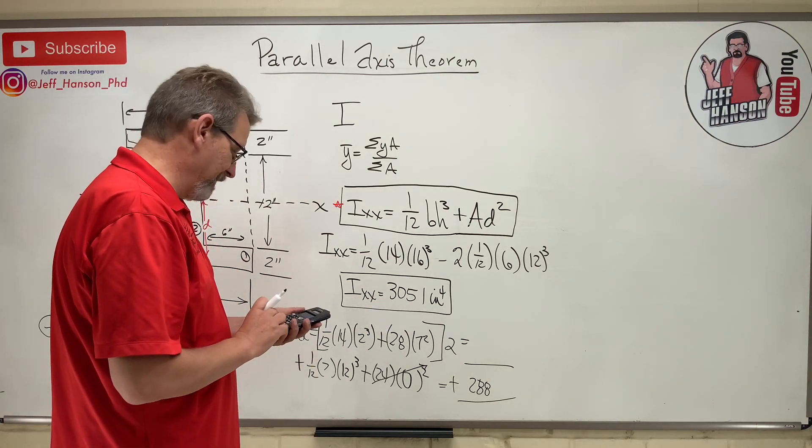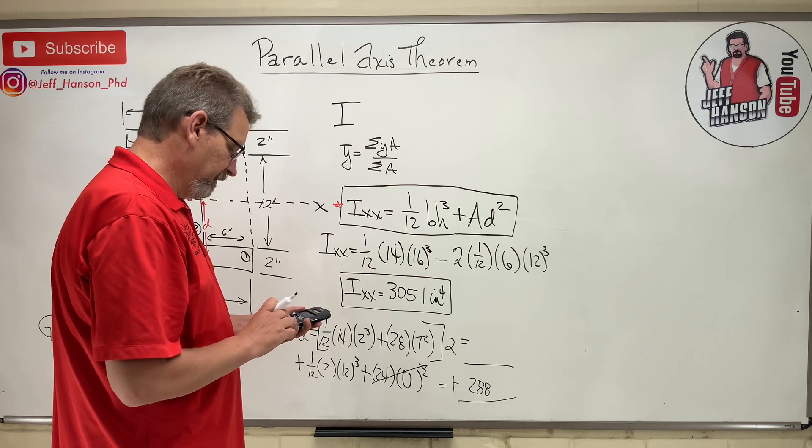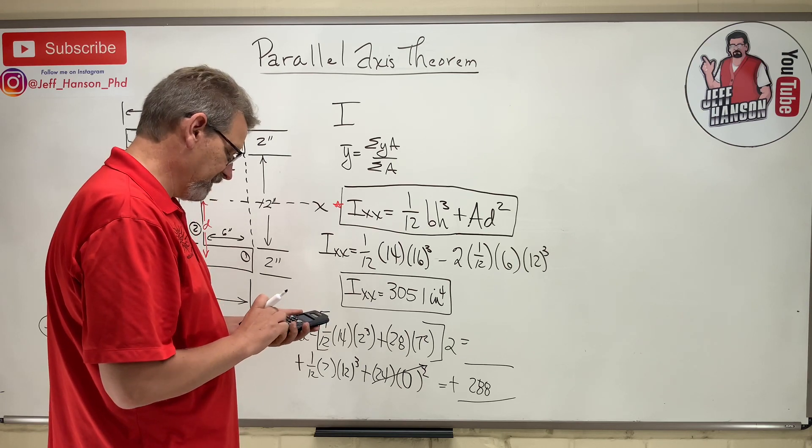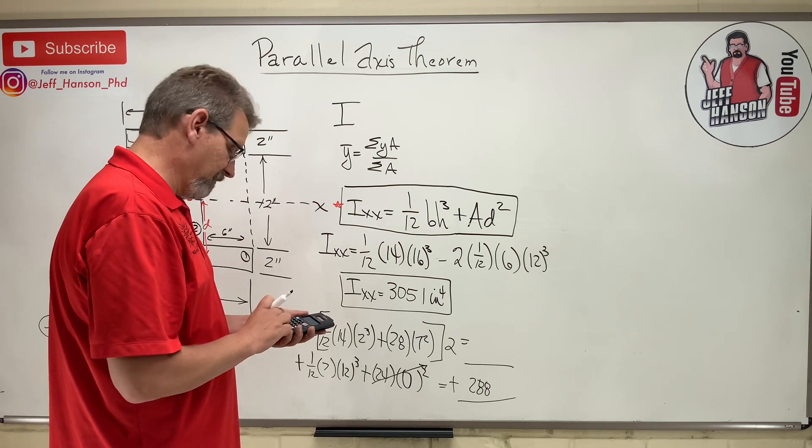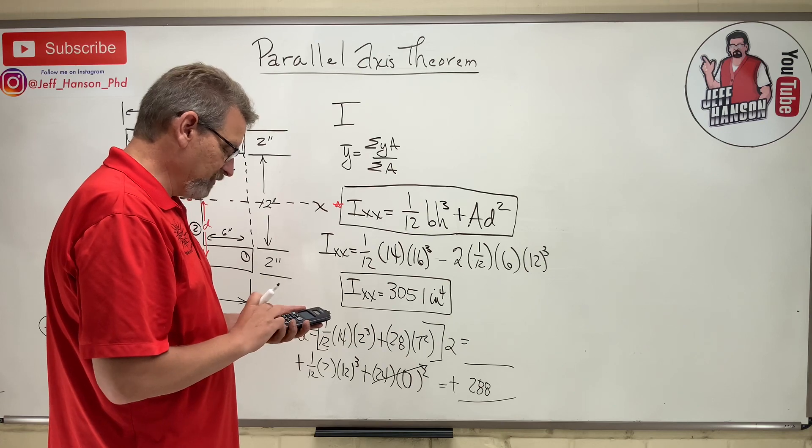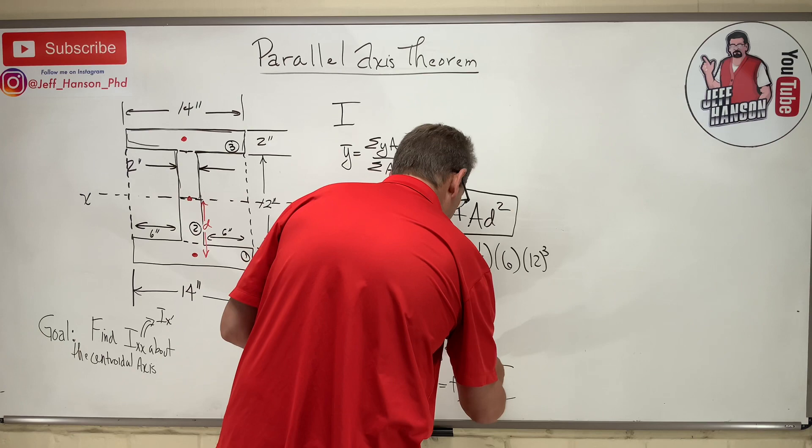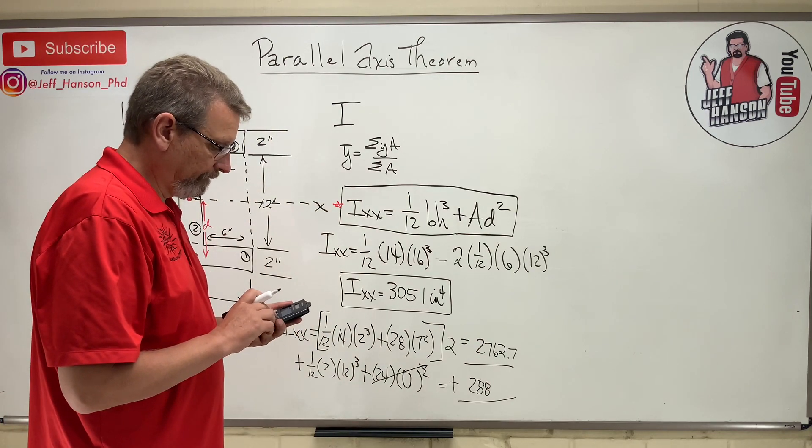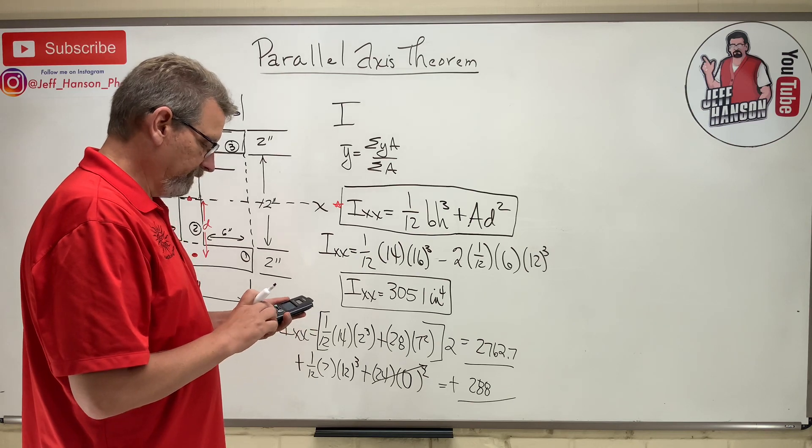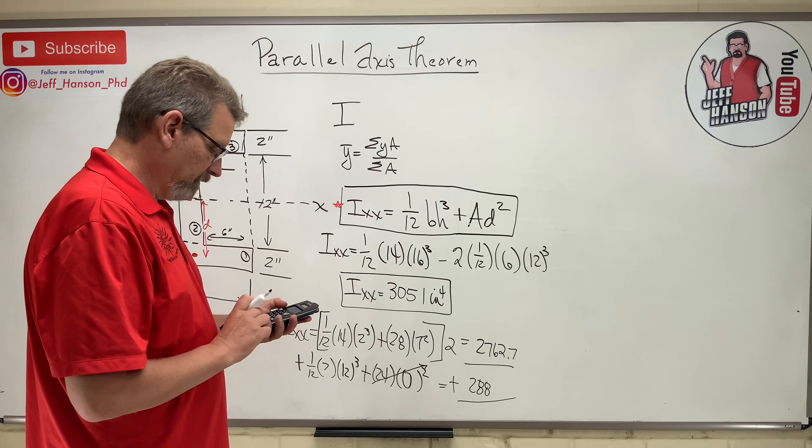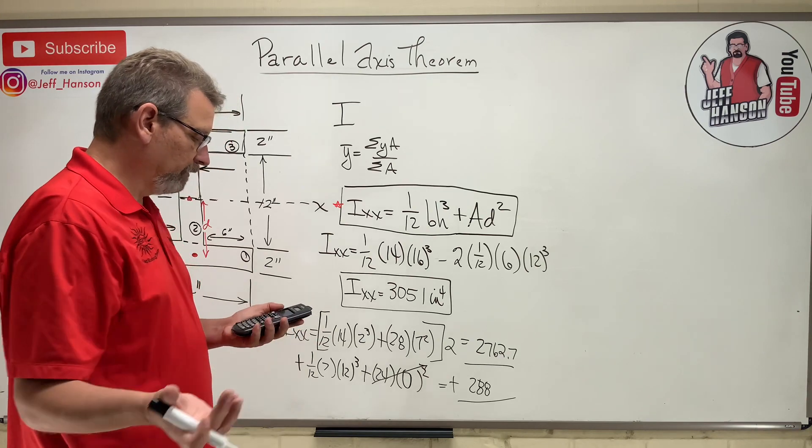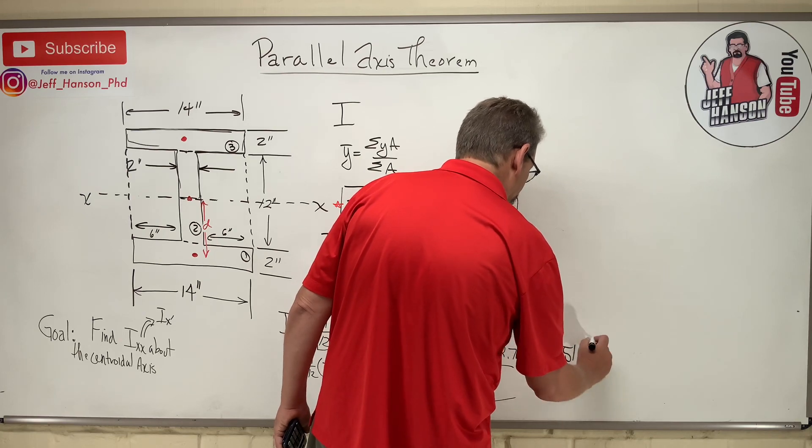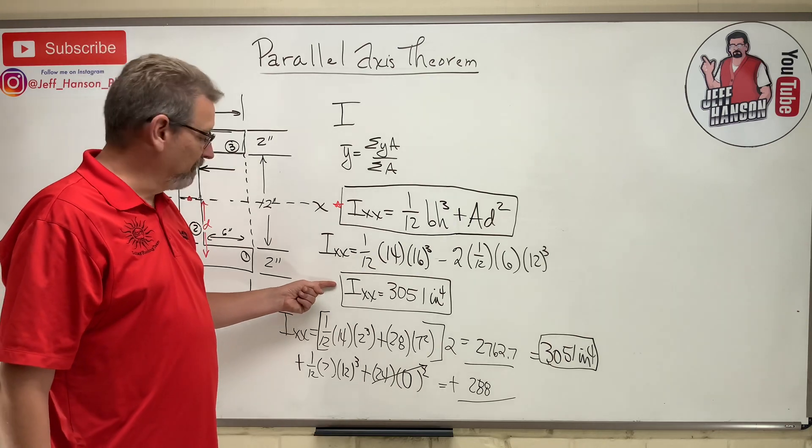So that's that bottom bit. The top bit up here, a little bit harder than that, not too bad. 14 divided by 12 times 2 cubed plus 28 times 49, right? Equals, and then that whole thing times 2 equals 2762.7. And let's see. That number, answer, plus 288 equals 3051. And of course, we better get the same thing. The moment of inertia has it done. We just calculated it two different ways.